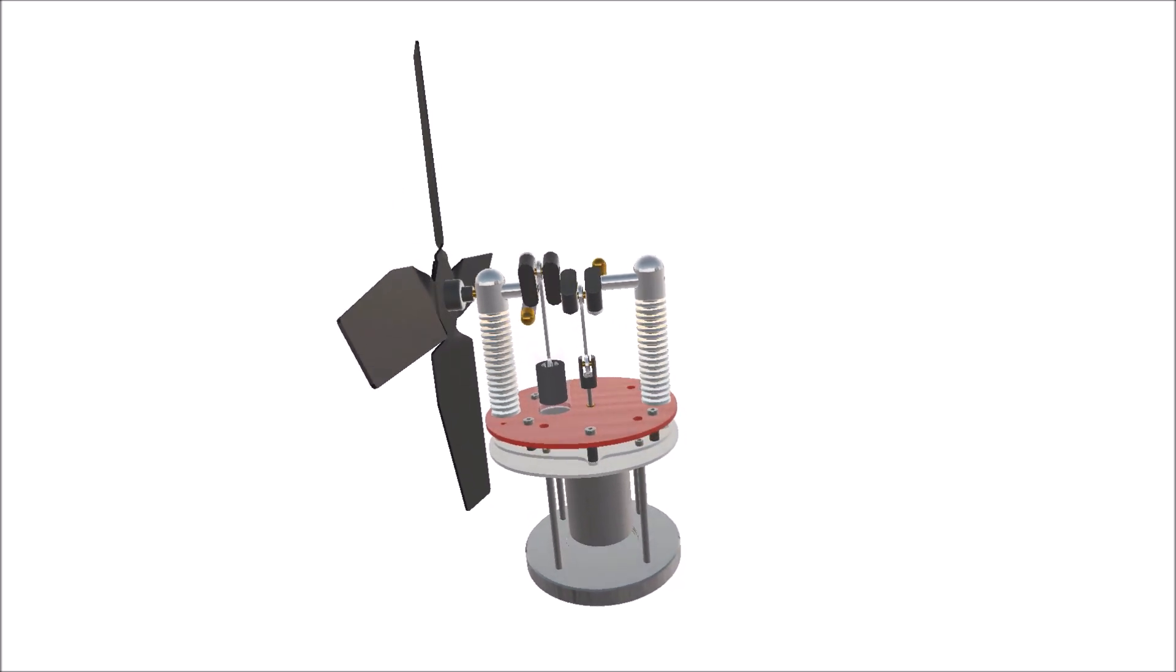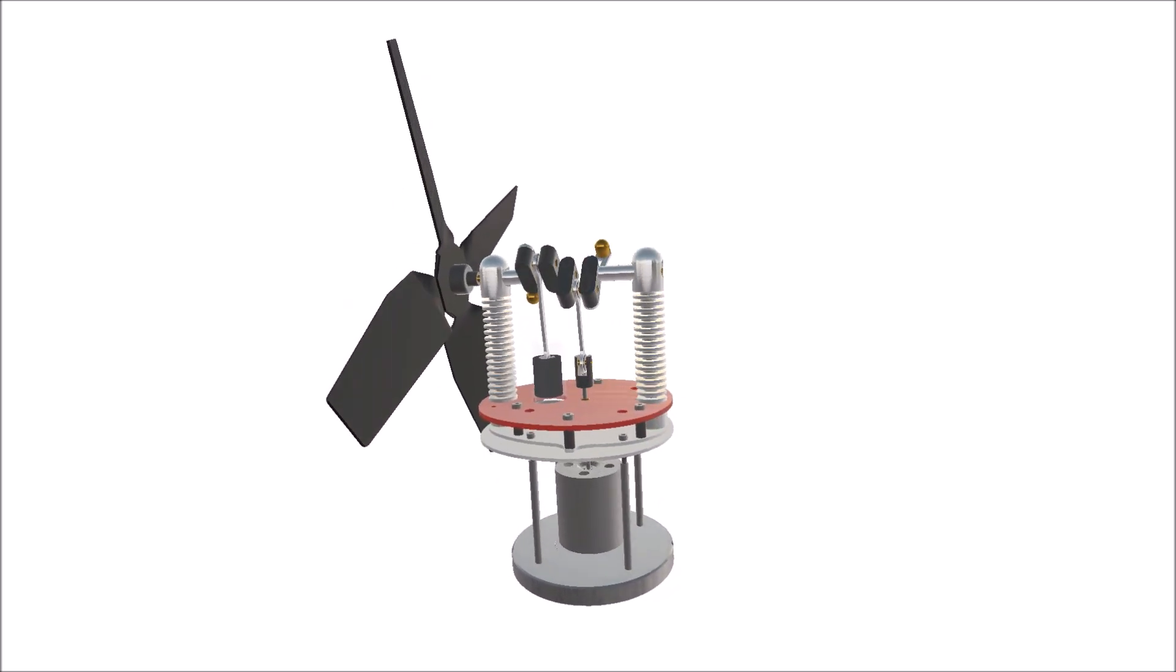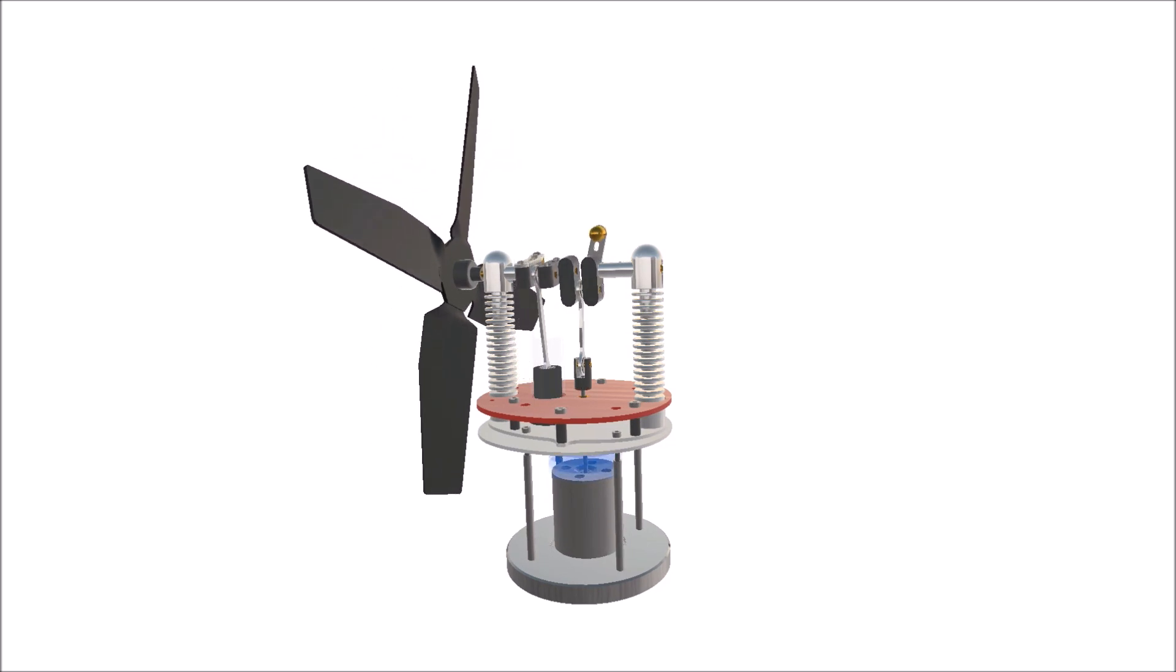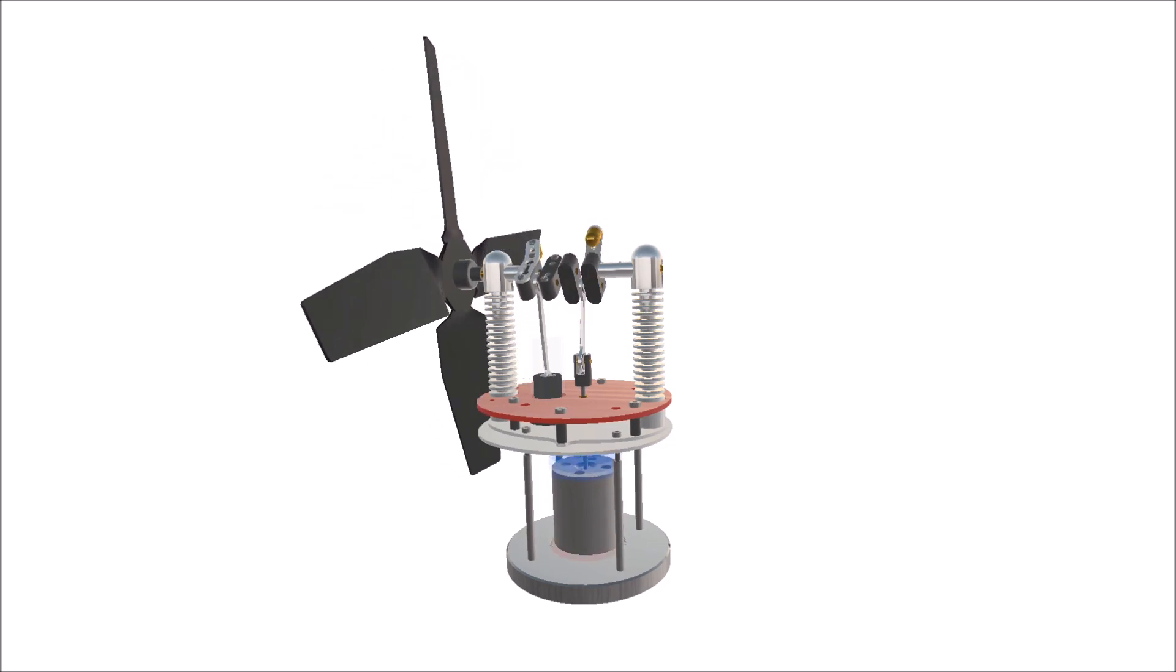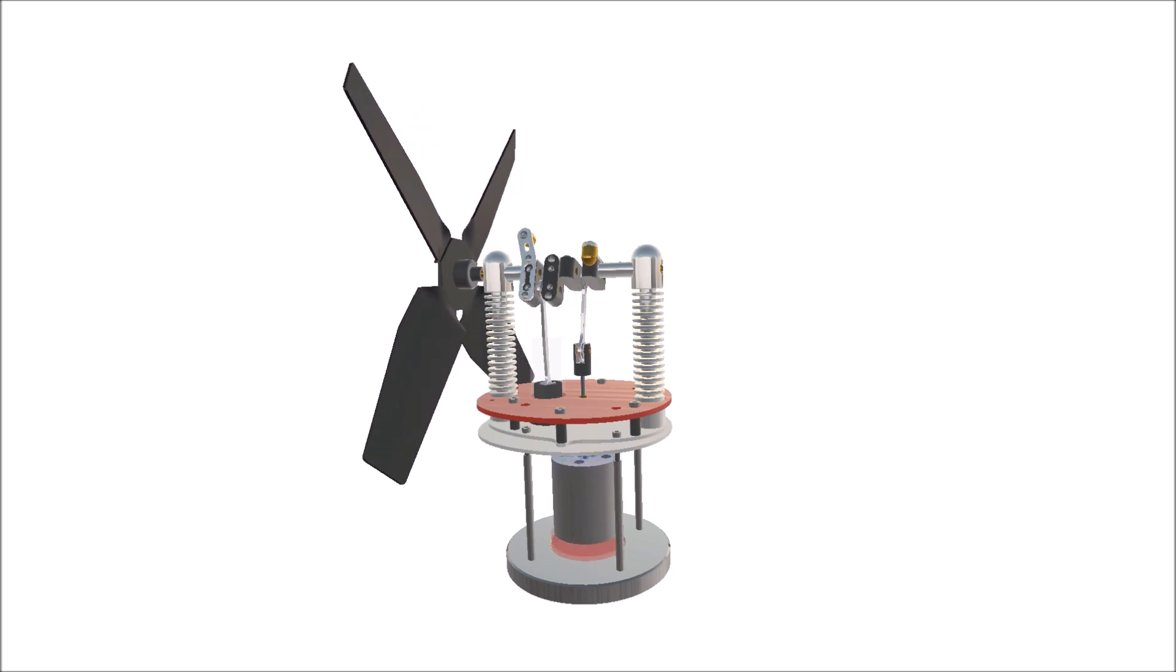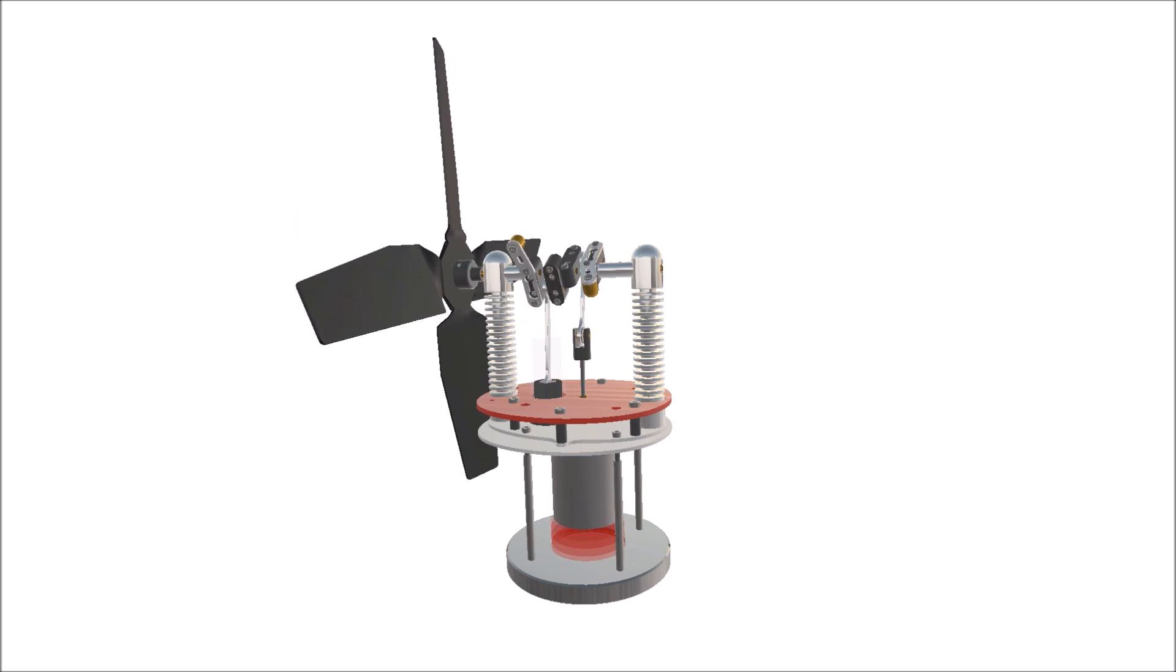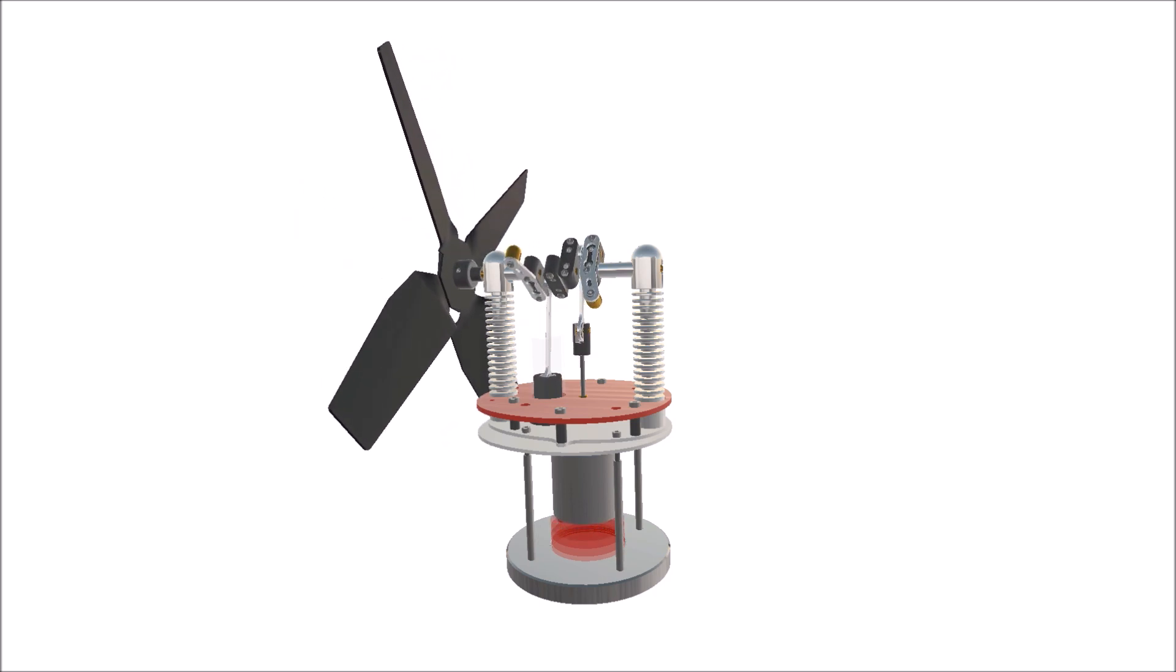In the animation, blue and red indicate the warm and cold air moving inside the cylinder. The displacer moves up and down, forcing the cold air to the hot base and the hot air to the cold silver plate. This causes the air inside to cycle between hot and cold.